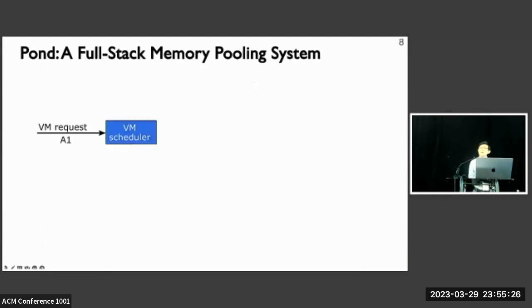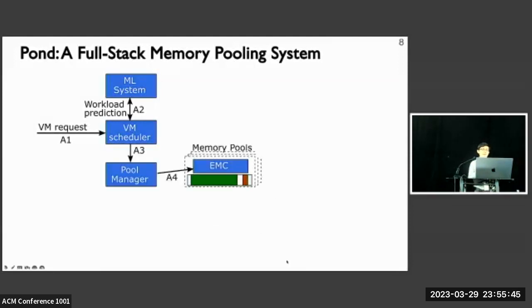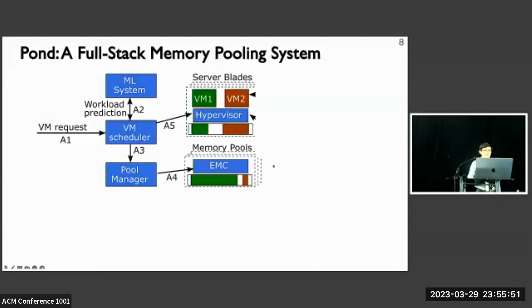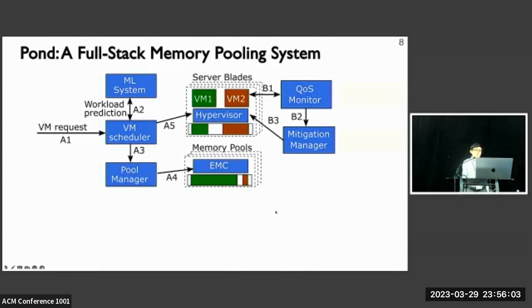To this end, we present Pond, a full-stack software hardware co-designed memory pooling system. In Pond, when VM requests come in, the VM scheduler will first talk to our ML system to identify the latency-sensitive VMs and the likely amount of untouched memory they need. Then the scheduler will make a decision on VM placement and try to allocate the memory from the pool. After that, the scheduler talks to the hypervisor to provision the pooled memory as part of the guest operating system physical address space. In the background, Pond uses a monitoring pipeline to reconfigure the VM if it detects QoS violations under mispredictions.